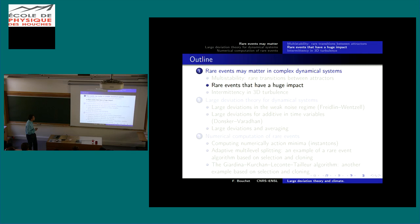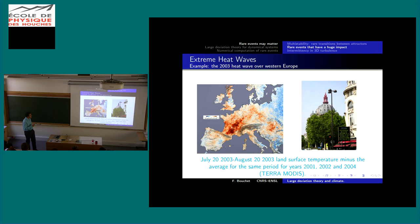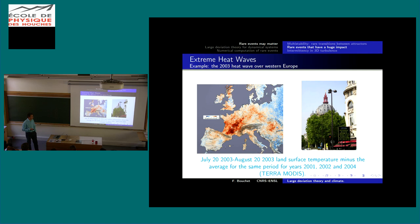That was the first example: rare transitions between attractors. Another example is rare events that matter because of their huge impact — extreme heat waves. I showed that we were able to compute thousands or hundreds of thousands more heat waves with a given numerical cost than by running the model without a rare event algorithm.